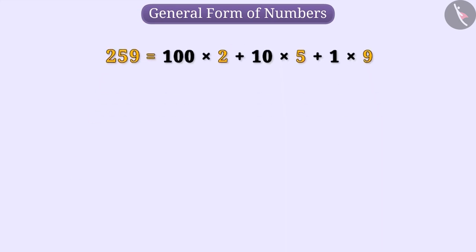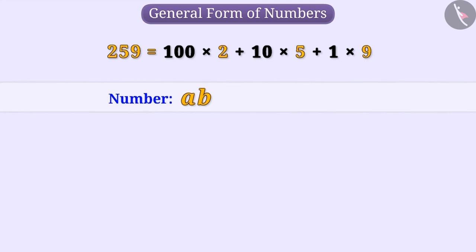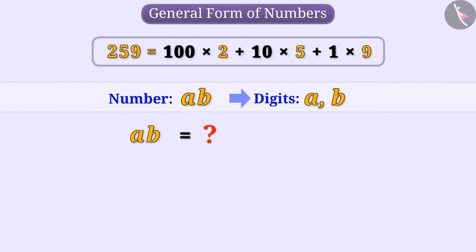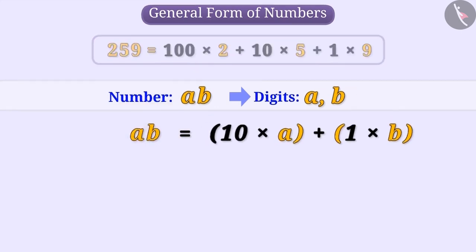Now suppose we have taken a number AB which has the digits A and B. Remember that AB does not mean A × B. Can you write it in this way? Try it. We will write this as 10 × A + 1 × B.